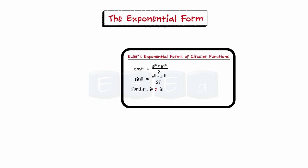Further, if z is a complex number, we define cos z = (e^(iz) + e^(−iz)) / 2 and sin z = (e^(iz) − e^(−iz)) / 2i.